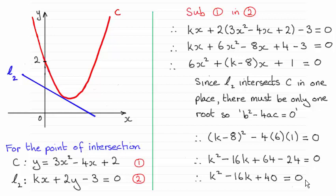Well the method we use is simply that if we were looking for where two lines intersect, then we take the curve C and the line L2 and we use simultaneous equations to find that point of intersection.